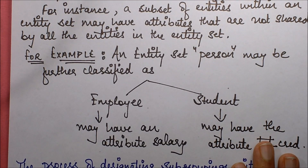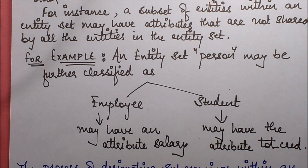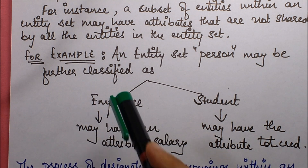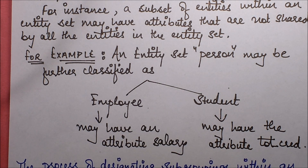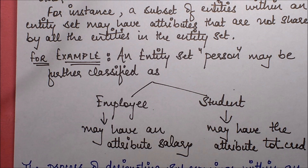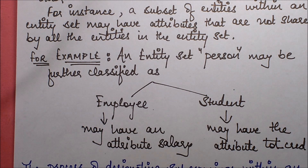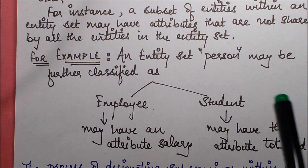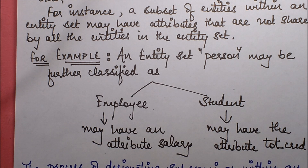For example, consider the entity set 'person'. A person may be classified as an employee or a student. An employee may have a salary, but a student may not. A student may have a unique roll number, and there are a certain set of total credits associated with the student, which is not the case for an employee.